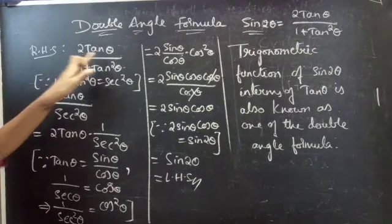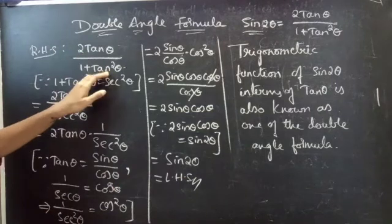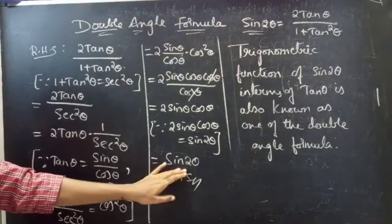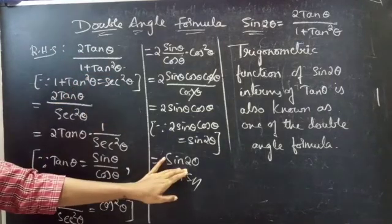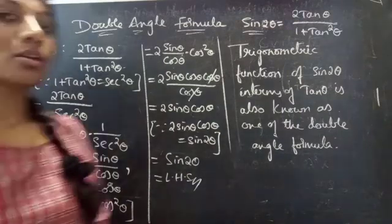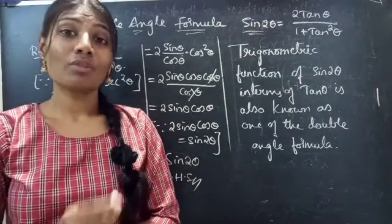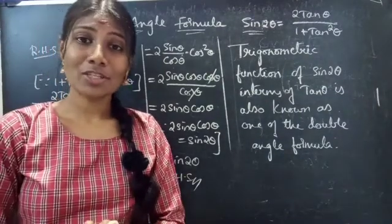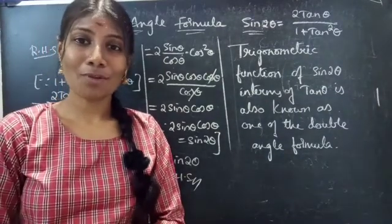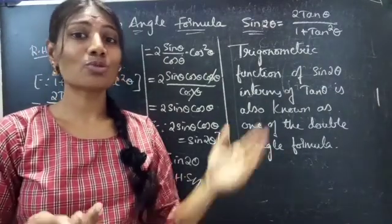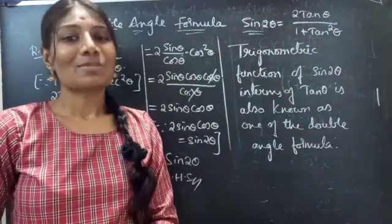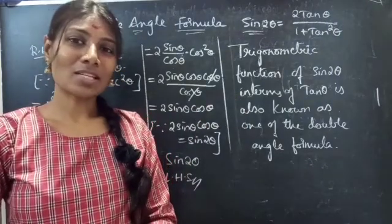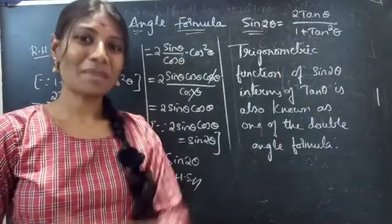Therefore, 2tanθ / (1 + tan²θ) = sin2θ. We have seen an important derivation of the double angle formula in terms of tanθ. Hope you understand — we will see you in the next video. Bye bye.